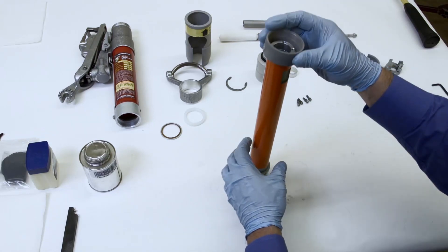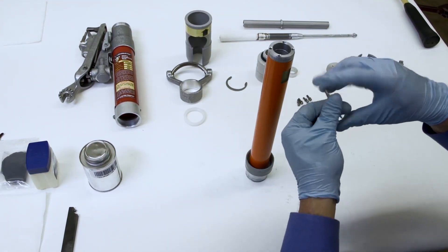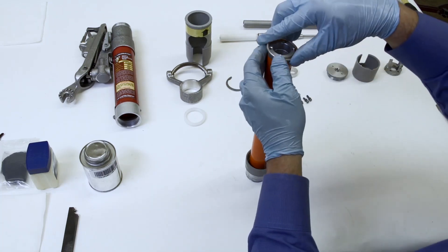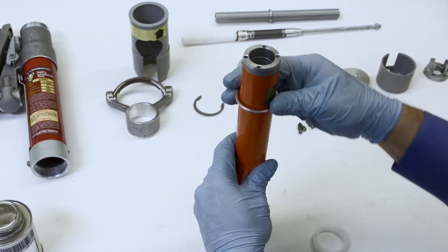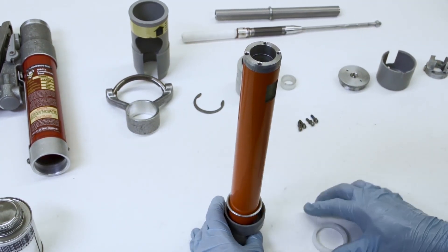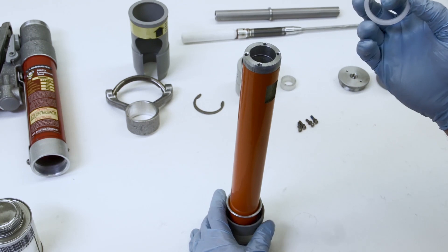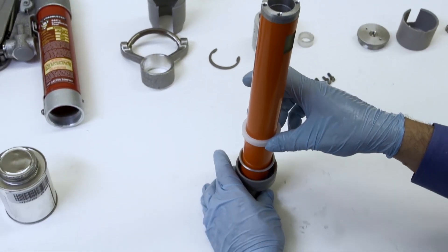Then slide the bearing retainer onto the inner tube assembly, followed by the inner tube seal. Make sure the flared edge is pointing toward the stationary contact. Use care to avoid damaging the seal. Using a twisting motion, work the inner tube seal onto the inner tube assembly. Use care going over the latch notch on the inner tube assembly. Then slide the bearing on the inner tube assembly.